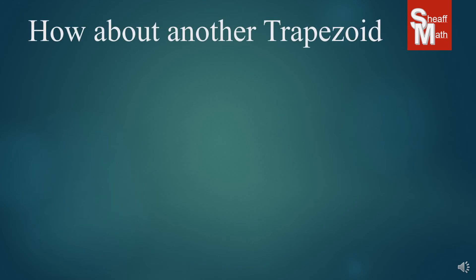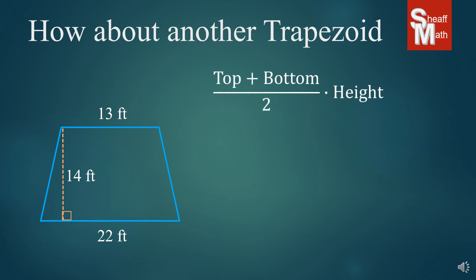All right, we're going to take a look at another trapezoid just so you catch it again. And so here we have two bases, 22 on the bottom, 13 on the top, and 14 is the height. And so we are going to use the same formula. We average those two, the top and bottom, 13 plus 22 divided by 2 and then multiply it by the height, 14. We get 35 divided by 2 times 14, and then that's 17.5 times 14. And after using a calculator, I got 245 square feet. So that's how you find the trapezoid.